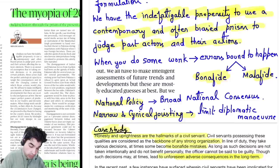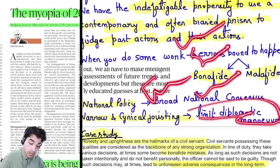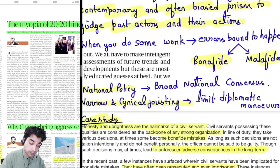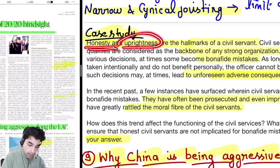Our national policy in international relations should be based on broad national consensus — not narrow or cynical jousting, rhetoric, or ultra-nationalism. These restrict our diplomatic maneuver for subject experts, diplomats, and officials. These are very good points.